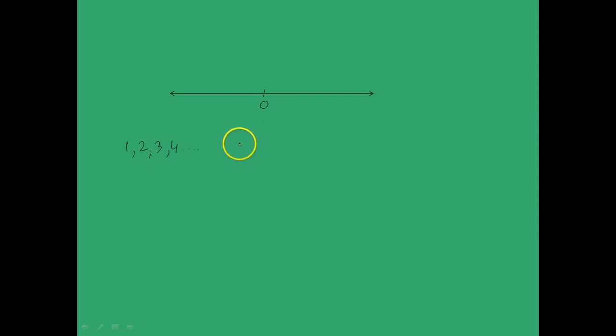First, take all the numbers like 1, 2, 3, 4, etc. from the number line. What do you get? This set of numbers is called natural numbers, and they are represented by capital N.